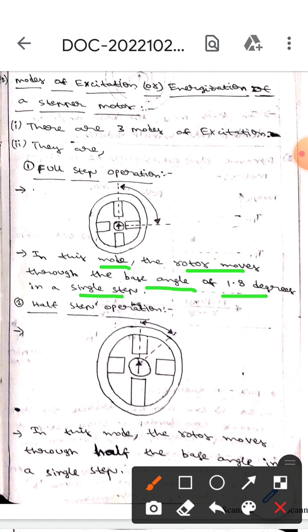In a single step, if the rotor is positioned here, then it will move like this, which means it will rotate to this position.